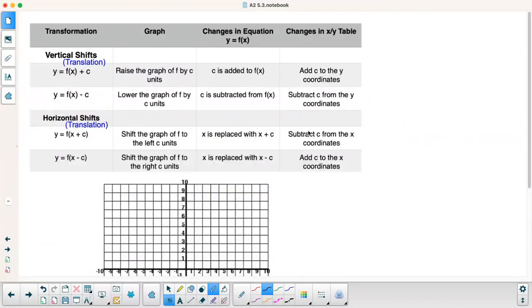All right, so remember your transformation rules. So if I want to go up, I just add the number on to the function. If I want to go down, I subtract it. If I want to go horizontal, I have to replace X with X plus C if I want to go left. Left X plus C. If I want to go right, I have to replace X with X minus C.